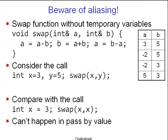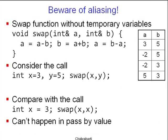One important caveat in using references is the so-called aliasing problem. You need to be very careful about aliasing while using references. Consider a swap function written without a temporary variable — using the arithmetic trick: a = a - b, b = a + b, a = b - a. This is a routine where passing by value is useless since I want to swap the state of two variables outside the function, so I have to use references.